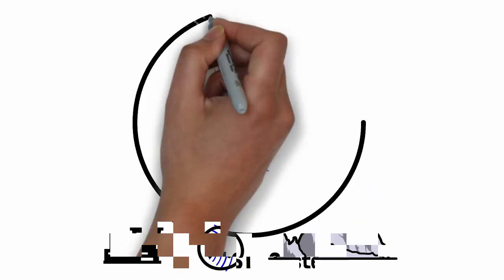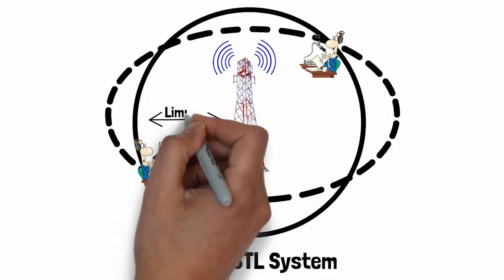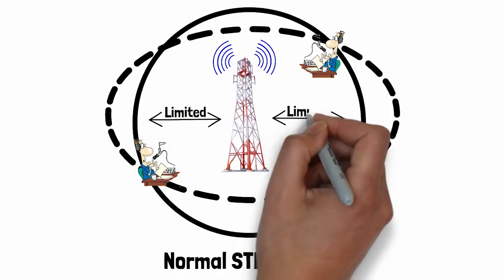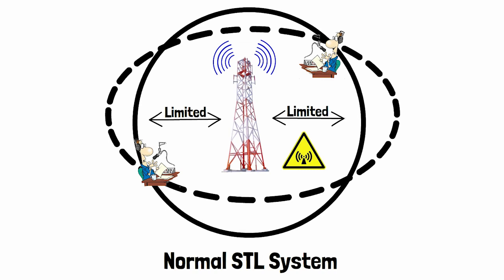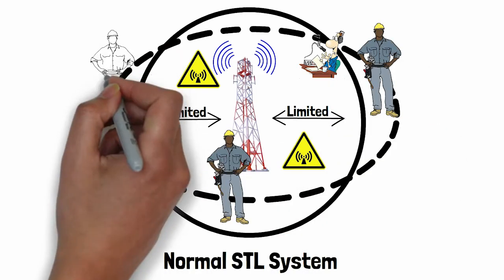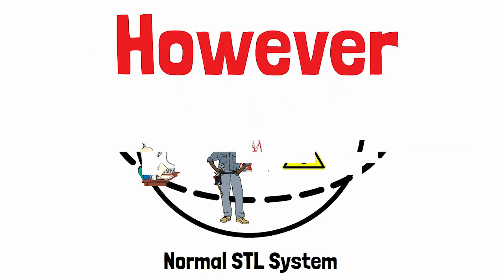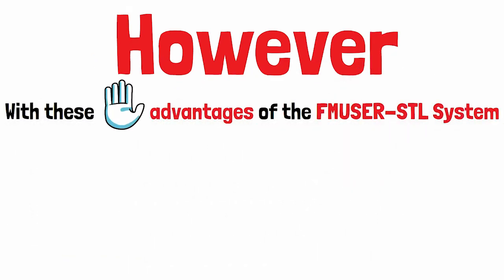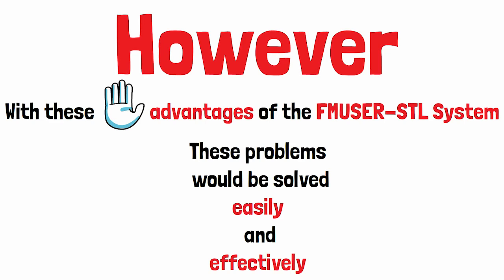In addition, the transmission distance of the traditional STL system signals is very limited. What's more, the traditional STL system has high radiation, so the requirements for the constructed site are relatively high. However, the FM User STL system can solve all these problems easily and effectively with five key advantages.